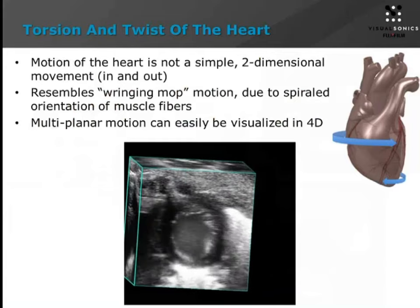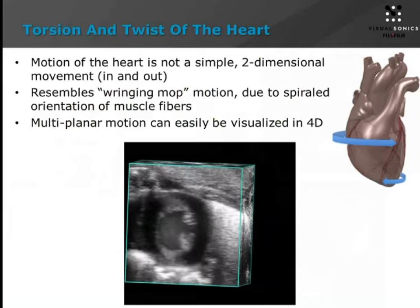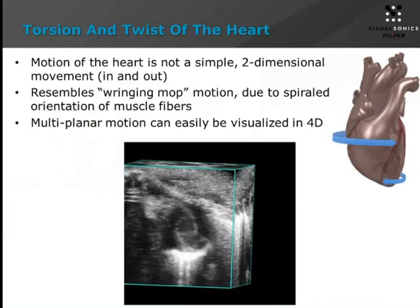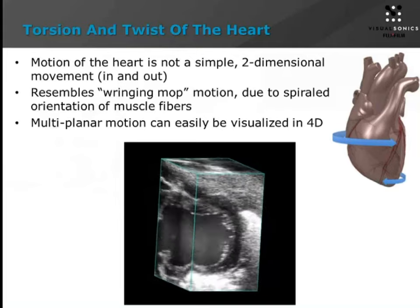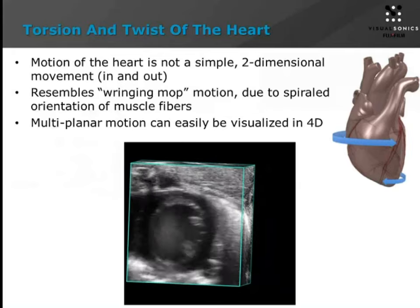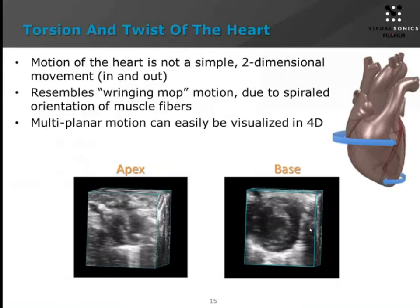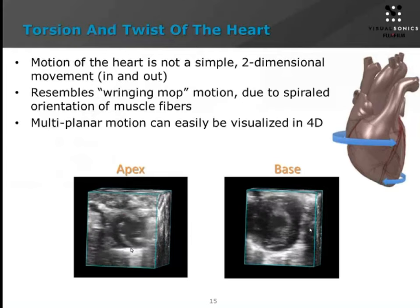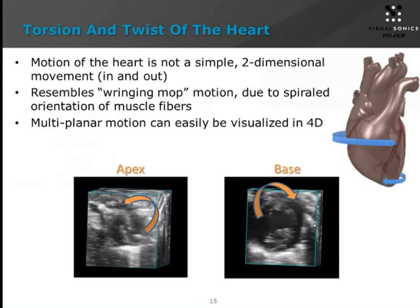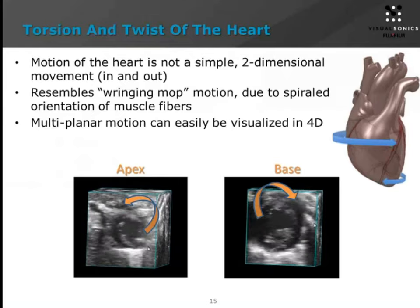This multi-planar type of motion can easily be visualized in four dimensions, which is something you can't really see as much in two dimensions. As we stepped through that 4D image, towards the apex we had a rotation that resembles more of a counter-clockwise rotation. As we stepped through the short axis view, towards the base of the heart near the aortic root, there's actually twisting that happens the opposite way. That really represents the wringing mop motion that many researchers are interested in.